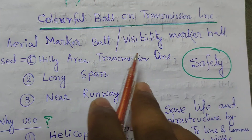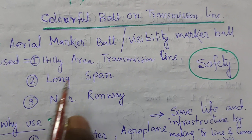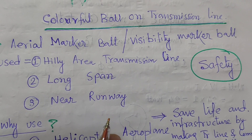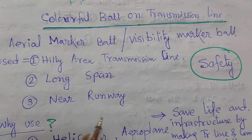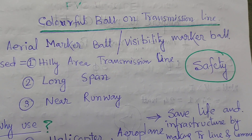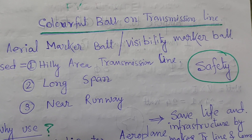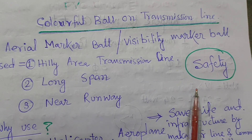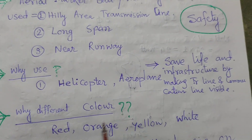Aerial marker balls and visibility balls are used in hilly area transmission lines, long span transmission lines, and near runways — where airports are present. If the transmission line is passing near the airport runway, we have to use aerial balls or lighting aerial balls for the visibility of aircraft. The main point of installation of this marker ball is safety.